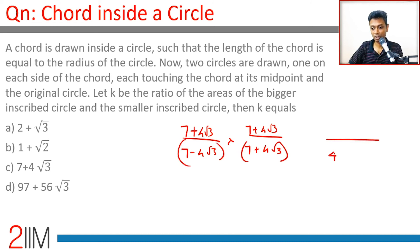Numerator: 7 squared which is 49, 4√3 squared which is 48, plus 2 into 7 into 4, plus 56√3. 97 + 56√3 is to 1 is the answer.